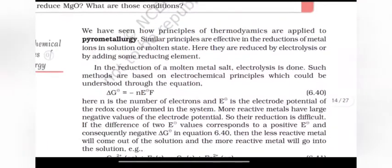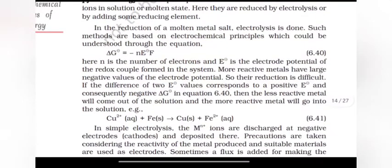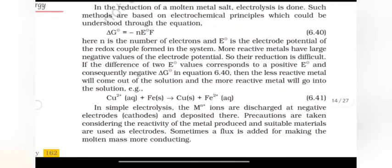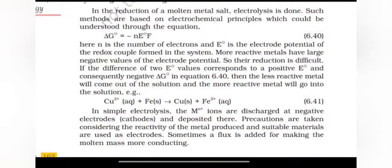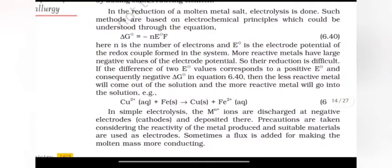Electrochemical Principles of Metallurgy. We have seen how principles of thermodynamics are applied to pyrometallurgy. Similar principles are effective in the reduction of metal ions in solutions or molten state. Here they are reduced by electrolysis or by adding some reducing element. In the reduction of a molten metal salt, electrolysis is done.